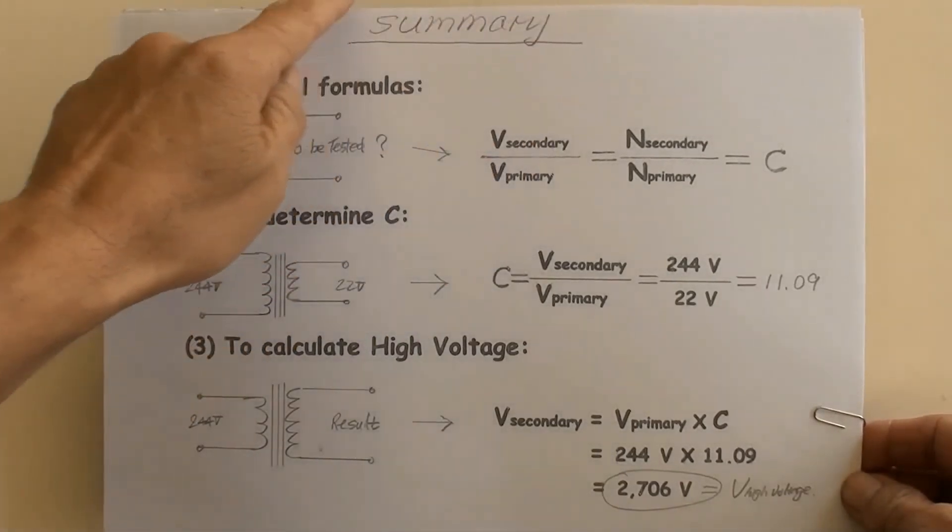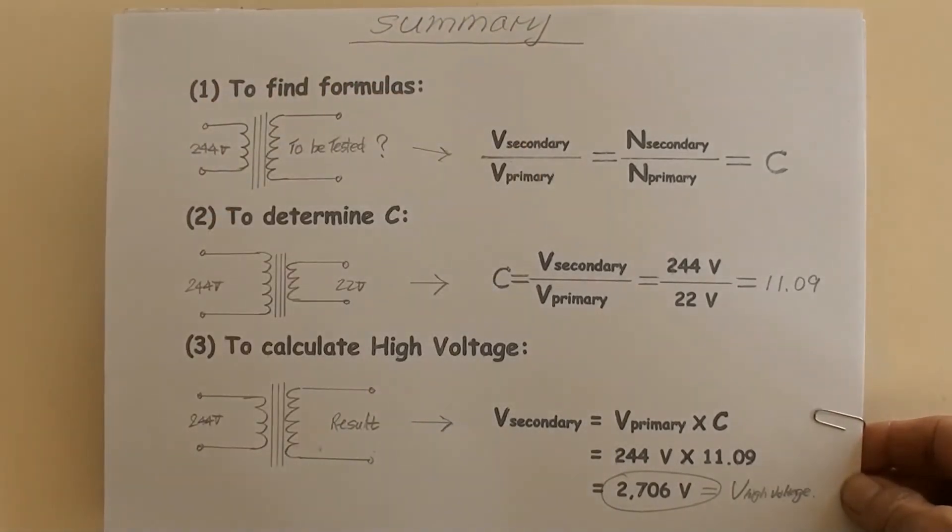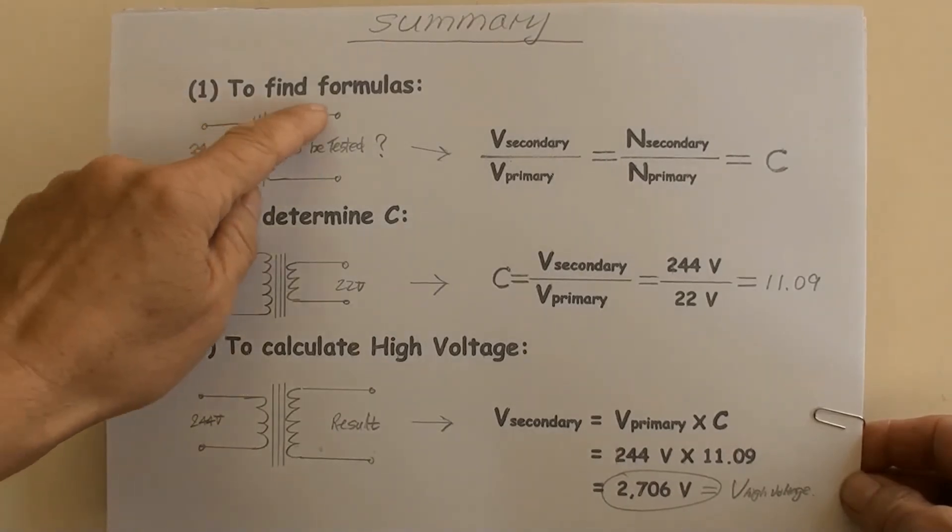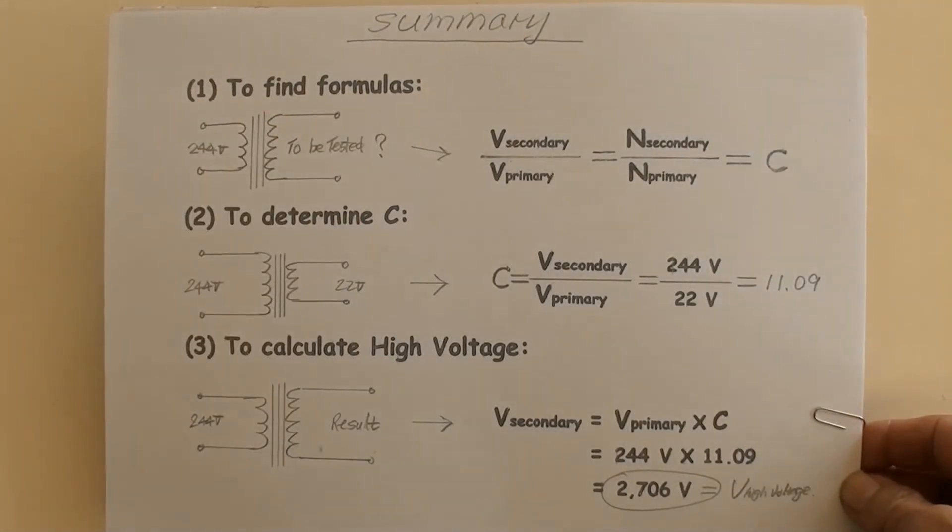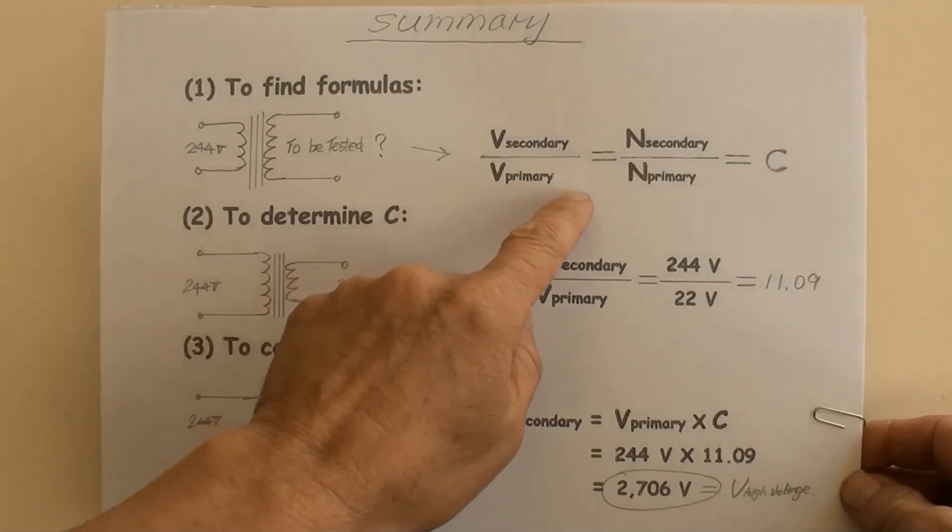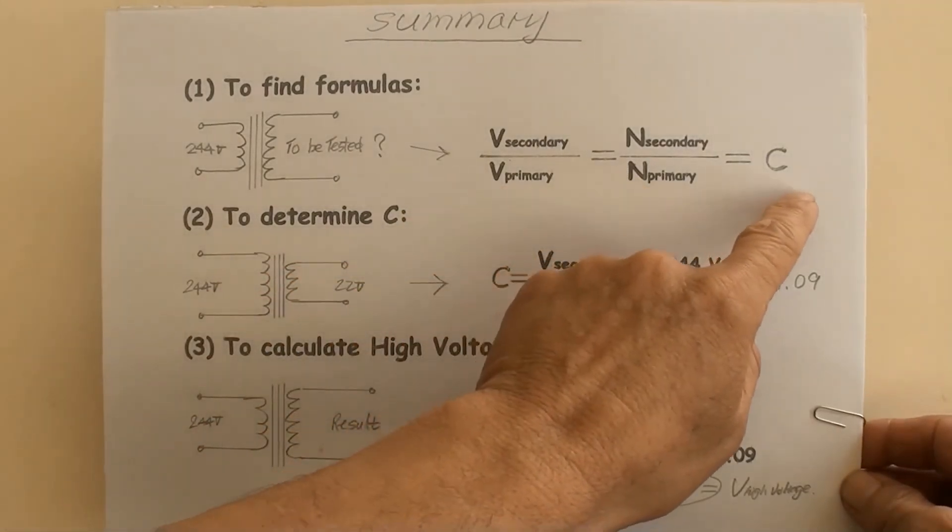Summary. Number 1: To find formulas. V secondary over V primary equals N secondary over N primary equals C.